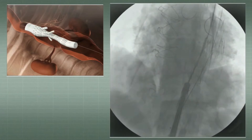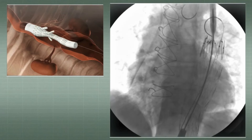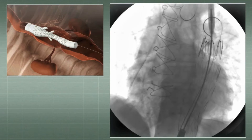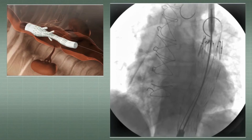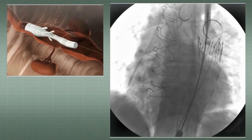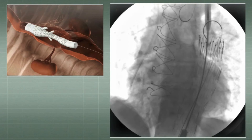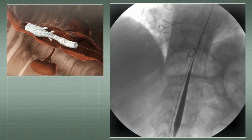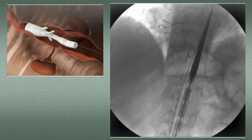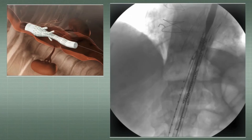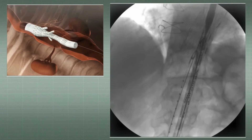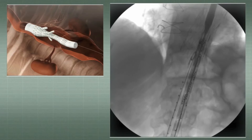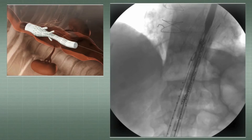After the thoracic stent graft is deployed, creating a proper landing zone and sealing the proximal portion of the aneurysm, the branch graft is deployed so that each visceral-oriented branch lands around two centimeters proximal to the origin of the arteries.